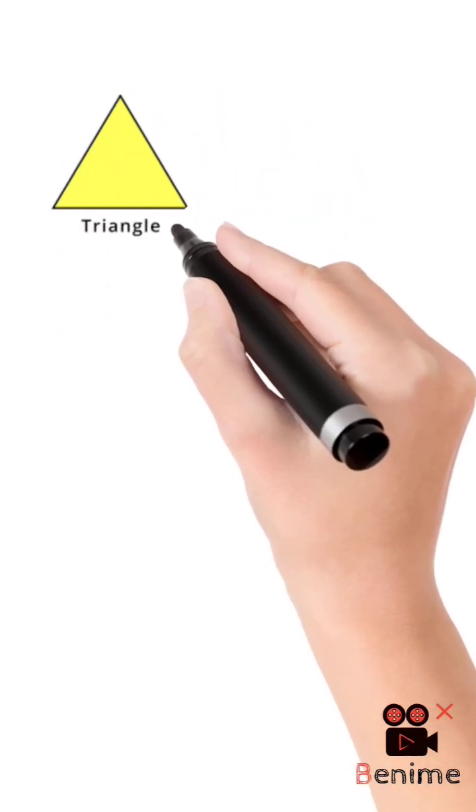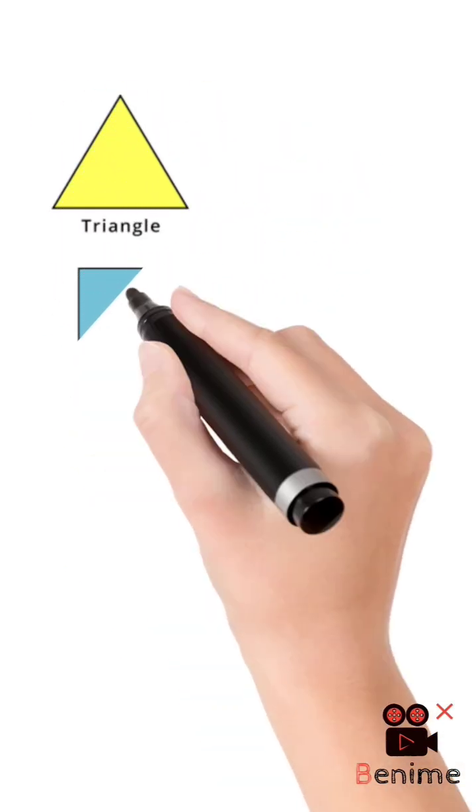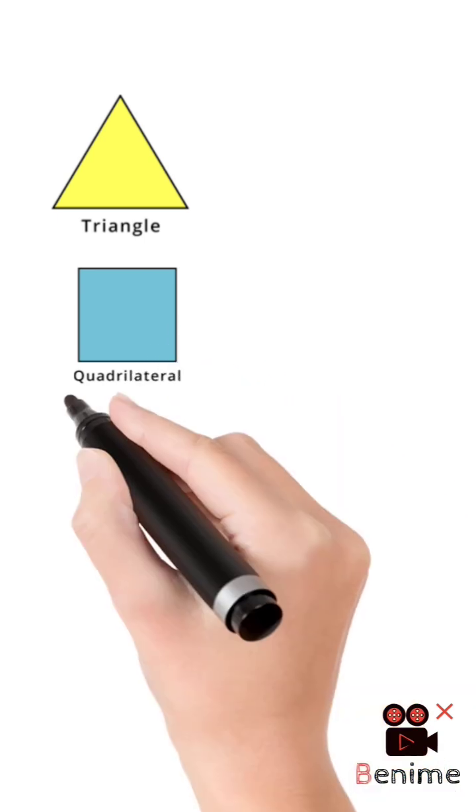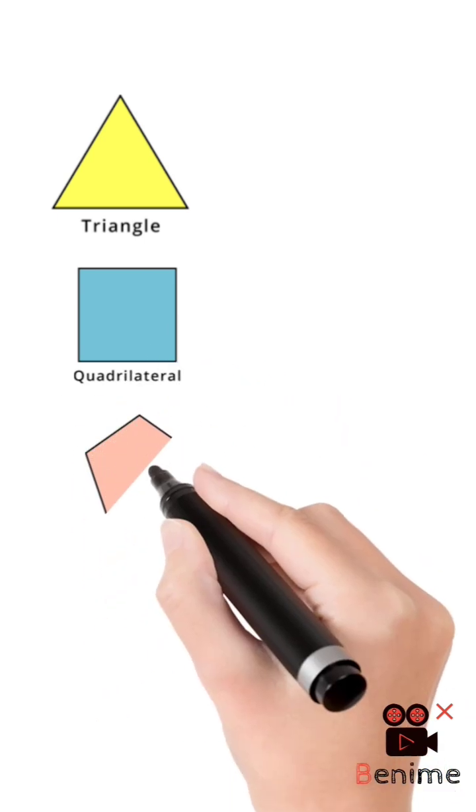Types of Polygon: If a polygon has 3 sides, it is called a Triangle. If it has 4 sides, it is called a Quadrilateral.